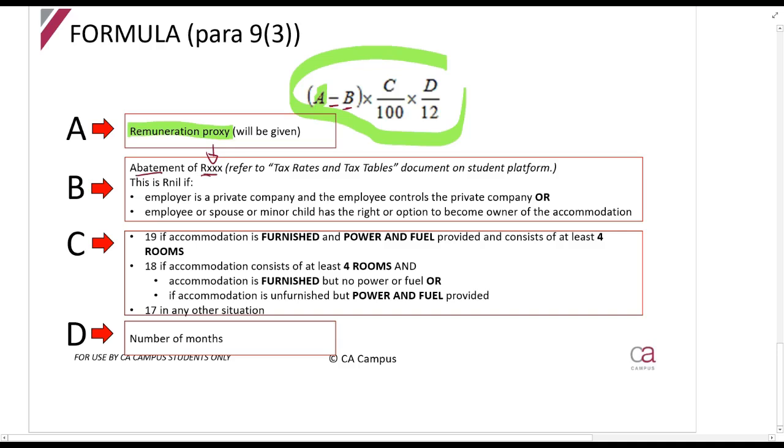B is an abatement amount - it gets deducted. This amount gets updated every year, which is why I haven't given it to you here. You can find it in your SAICA student handbook or in the tax rates and tables document on the student platform. This should also be provided in the exam.